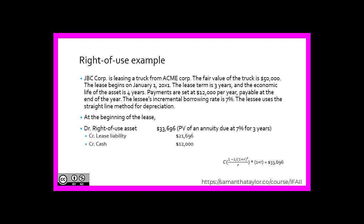JVC Corp. is leasing a truck from Acme Corp. The fair value of this truck is $50,000. The lease begins on January 1st, 20X1, with a lease term of three years, and the economic life of the asset is four years. Lease payments are set at $12,000 per year, payable at the end of the year. The lessee's incremental borrowing rate is 7%, and the lessee uses the straight-line method for depreciation.